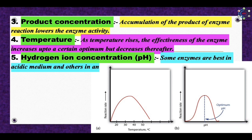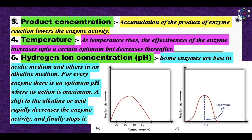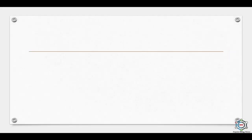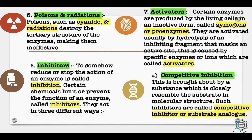Regarding pH: some enzymes work best in an acidic medium and others in an alkaline medium. For every enzyme there is an optimum pH where its action is maximum; a shift to the alkaline or acidic rapidly decreases the enzyme activity and finally stops it. In both temperature and pH, after the optimum, activity starts decreasing. Poisons and radiations: poisons such as cyanide and radiation destroy the tertiary structure of the enzymes, making them ineffective. Activators: certain enzymes are produced by living cells in an inactive form called zymogens or proenzymes, activated usually by hydrolysis of an inhibiting fragment that masks an active site, caused by specific enzymes or ions called activators.